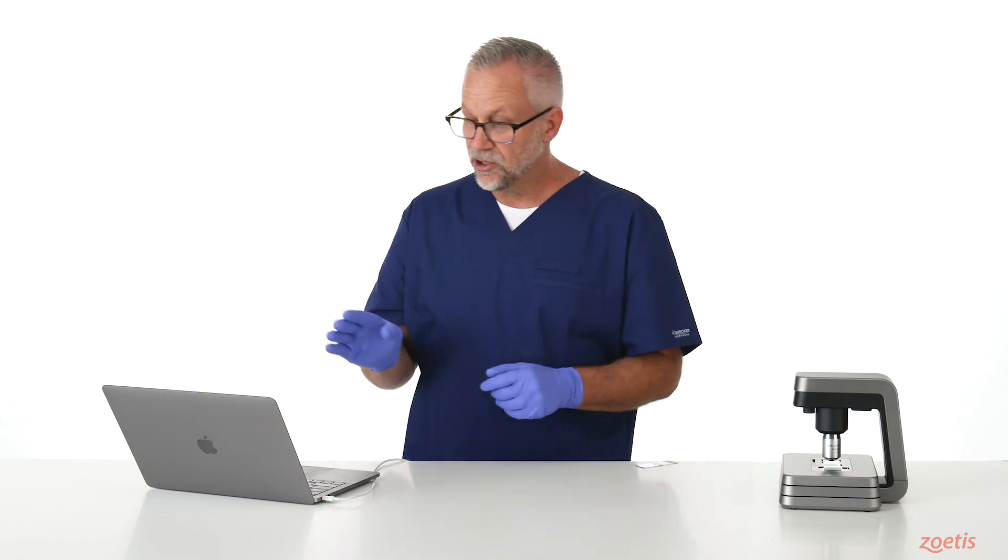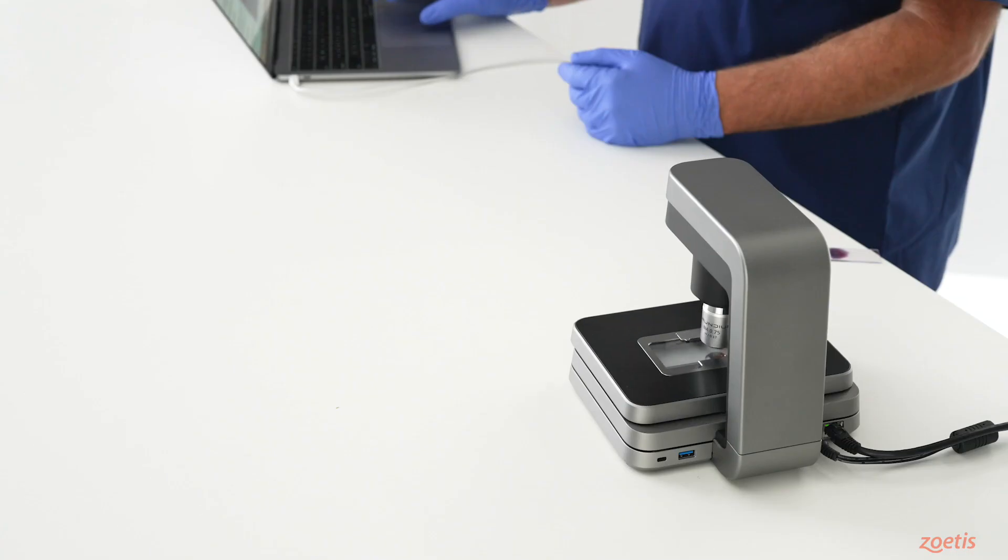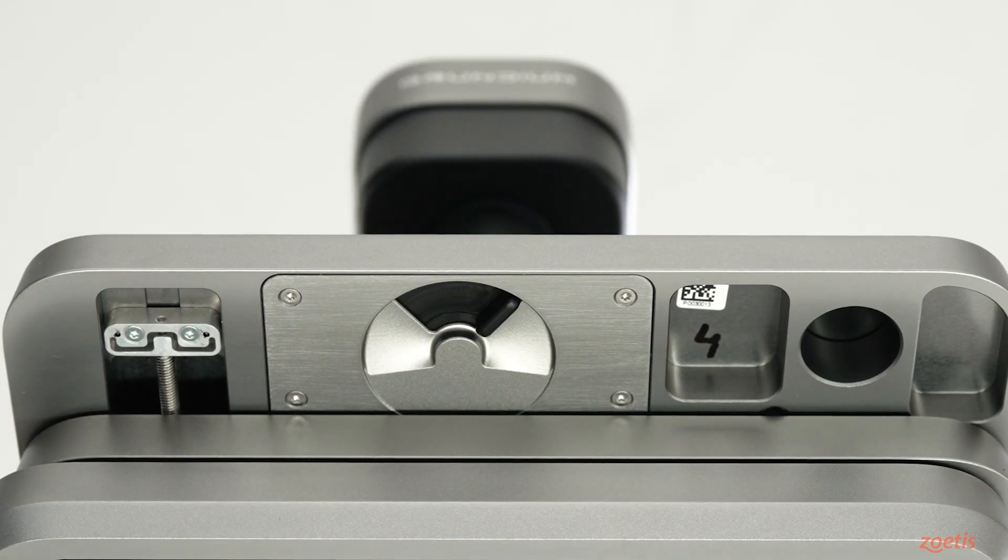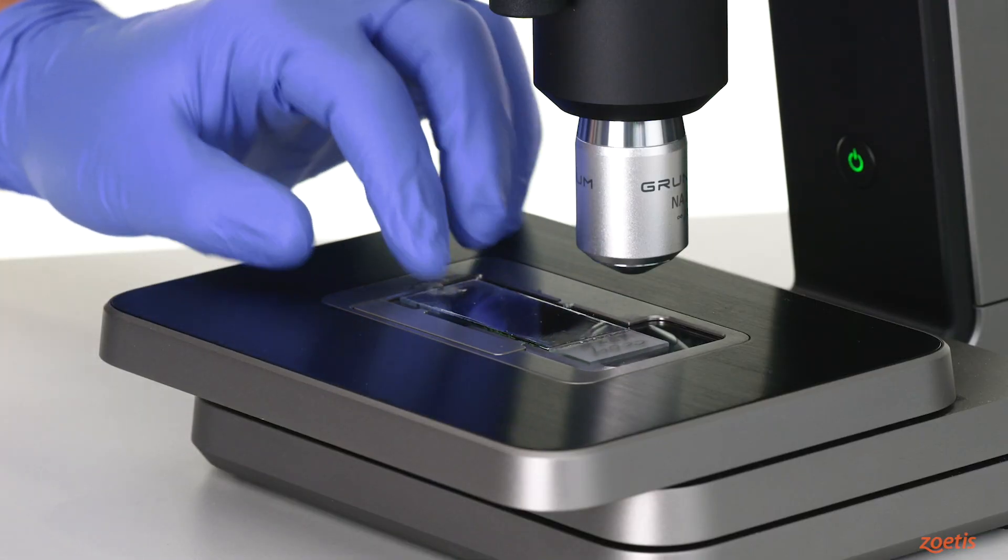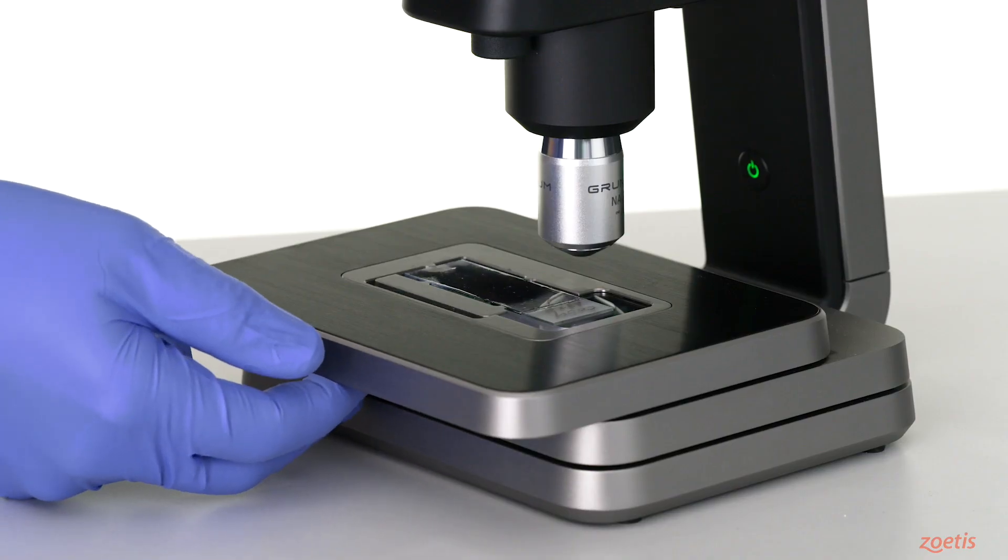If it's closed, you can return to VetScan Images and click on the Open Tray button. With the locking mechanism open, place the slide with the label towards the right of the stage and make sure that it's face up on the stage, and then close the locking mechanism.